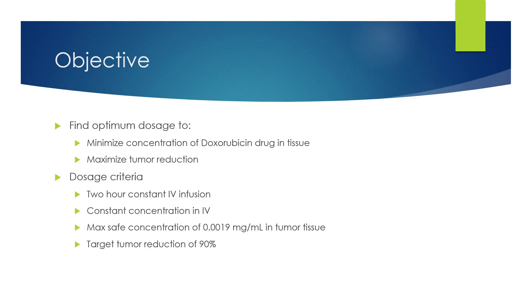And the criteria for our dosages is a two-hour constant IV infusion, which is typical for chemotherapy treatments. We'll have a constant concentration in the IV. We determined a maximum safe concentration was going to be 0.0019 milligrams per milliliter of the doxorubicin drug in the tissue, which was a typical value we found in a paper on doxorubicin, and we have a target to reduce the tumor by 90%.